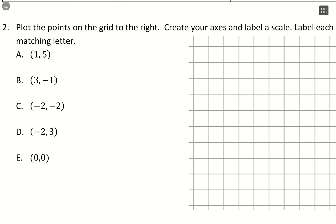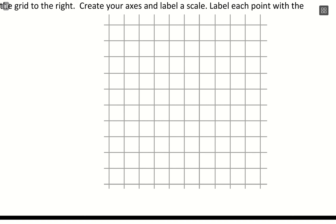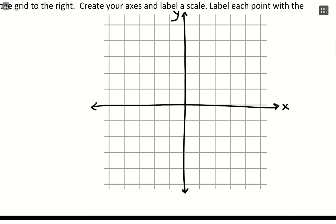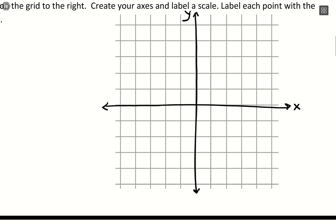Next is plotting points. We're given some coordinates and a blank grid, so we need to set up our axes — a vertical axis and a horizontal axis. Always label these: horizontal is x and vertical is y. Also label a scale; since our numbers are all pretty small, we can use a scale of 1 for both x and y. You must set a scale for both axes since you could use different scales depending on your numbers.